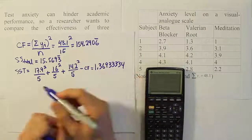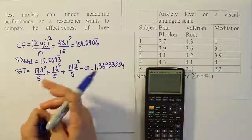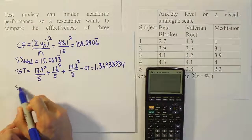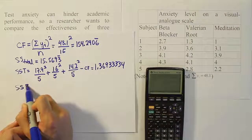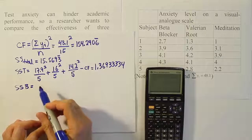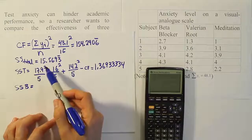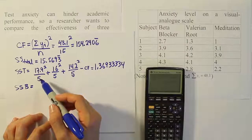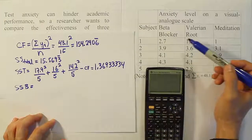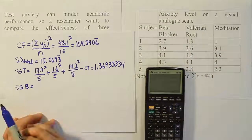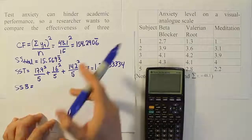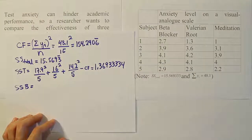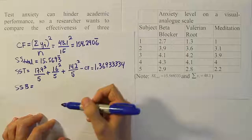Now we do a very similar calculation for the sum of squares for blocks, SSB. It's the same type of thing: block total squared divided by the number of values in that block, which equals the number of treatments — so 3 for each fraction. We'll have 5 fractions, one for each block.